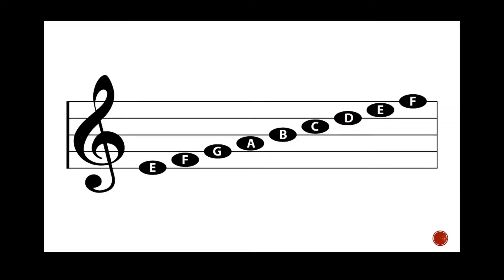In the previous lesson we learned about the notes on the stave. We learned about the notes on each line of the stave: E, G, B, D and F. And we learned about the notes in between each line on the stave: F, A, C, E. If you can't remember and you would like to look back at that video to get a little bit more confident, then please do so — you can find it on my channel.